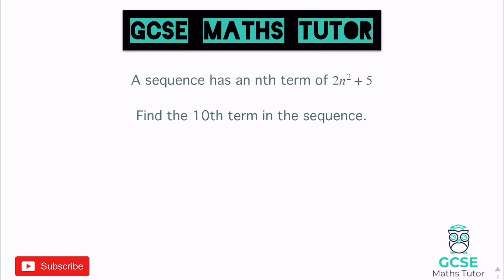Now for something slightly different: a sequence has an nth term of 2n squared plus 5 — find the 10th term. This is a quadratic sequence, but we approach it the same way. The nth term has already been given to us, so we just substitute 10 in. We get two lots of 10 squared, then add 5.